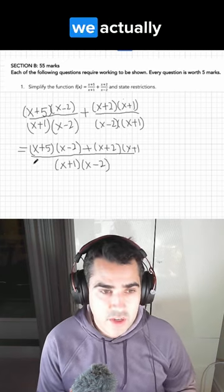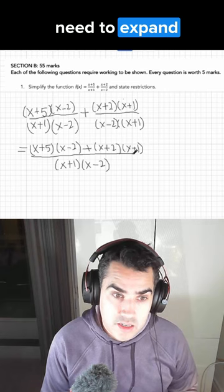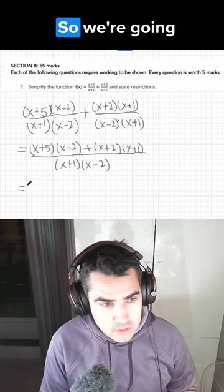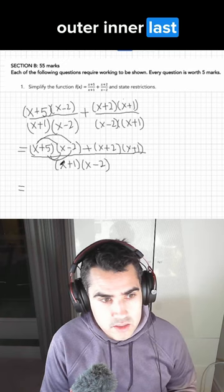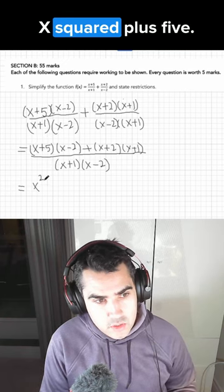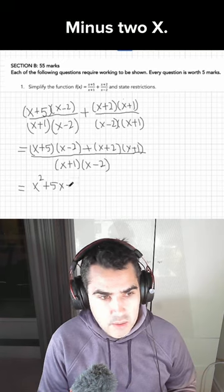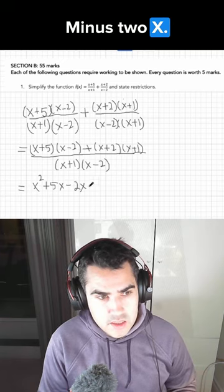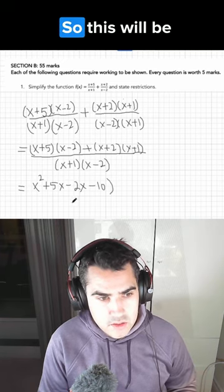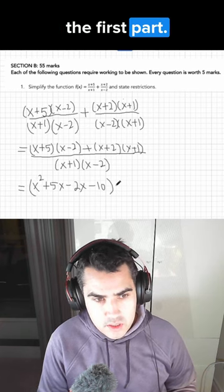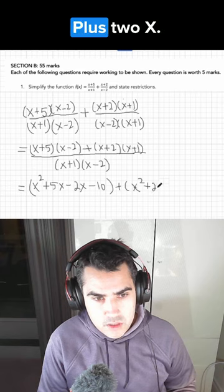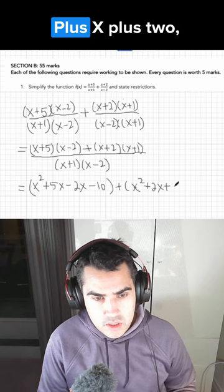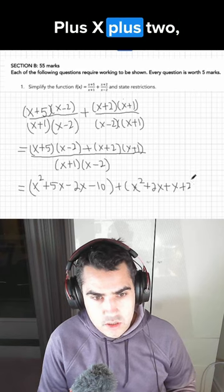To simplify this, we actually need to expand these quadratics. So we're going to use FOIL: first, outer, inner, last. So we're going to get x squared plus 5x minus 2x minus 10. So this will be the first part, and the second part will be x squared plus 2x plus x plus 2.